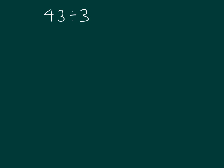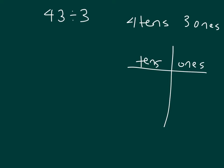Let's start with this problem here. We have 43 divided by 3. What disks will you draw to represent 43? Right, 4 tens and 3 ones. So we'll make a place value chart where we have tens and ones. We'll draw 4 tens, and 3 ones. So we just modeled 43.